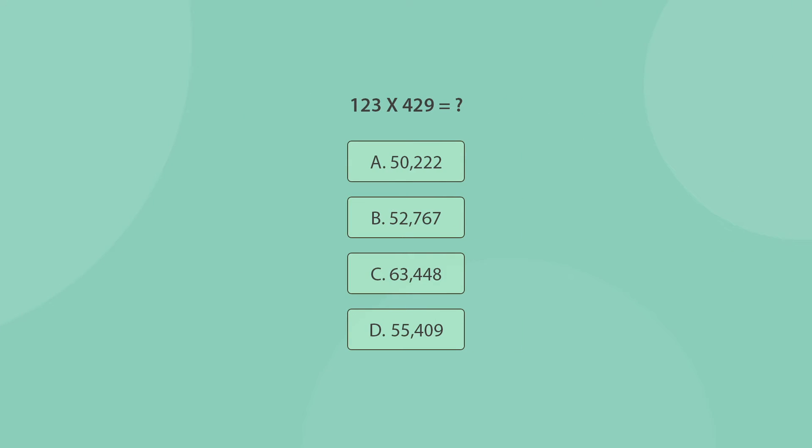There is an easy way to quickly calculate multiplication of large numbers. Multiply only the last digit in each number and search for the outcome in the answers. For example, all you need to do here is multiply 3 by 9, which equals 27. This means that the last digit in the answer has to be a 7, which means that the correct answer is...